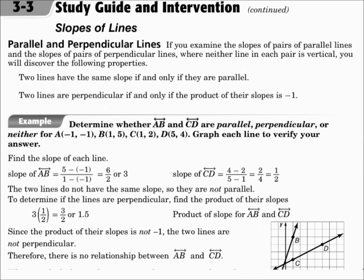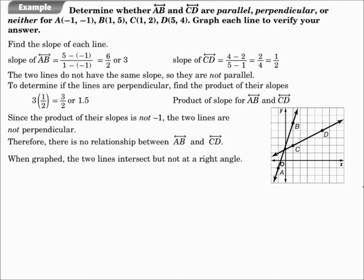Slopes are important when talking about parallel and perpendicular lines. Parallel lines have the same slope, and perpendicular lines have slopes with a product of negative one. Also remember that vertical and horizontal lines are perpendicular — zero and undefined slope can't be multiplied, but they're still perpendicular. In this example, the slope of line AB is 3 and the slope of line CD is one-half. Those are not equal, so they're not parallel. And 3 times one-half is 1.5, which is not negative 1, so they're not perpendicular. This is neither.